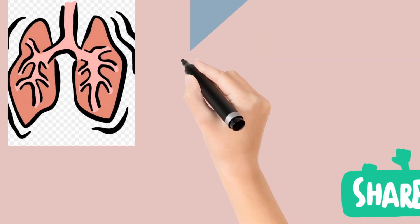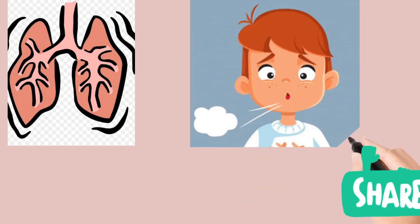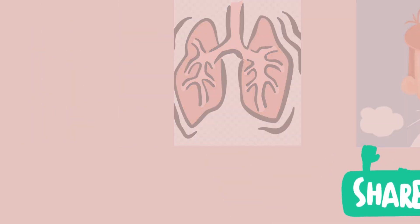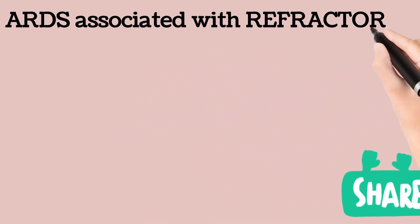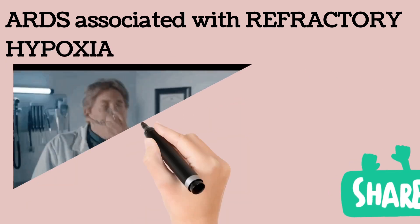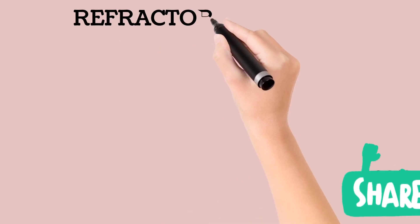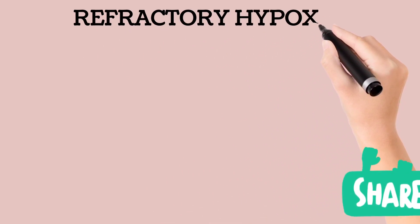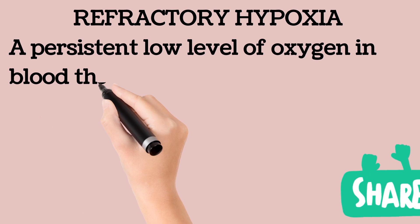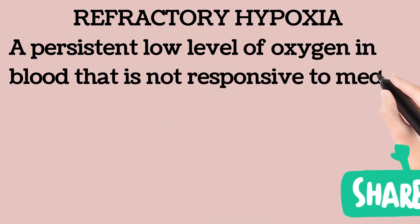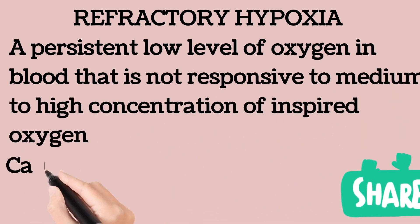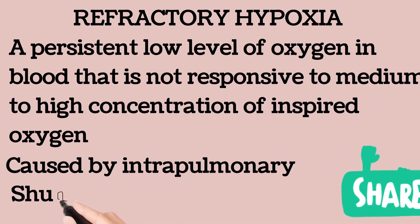At low compliance, lungs become stiff and the work of breathing is increased, as seen in many clinical conditions like ARDS. Low lung compliance is associated with refractory hypoxia, which means a persistent low level of oxygen in the blood that is not responsive to medium to high concentrations of inspired oxygen.